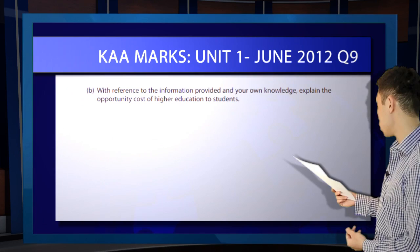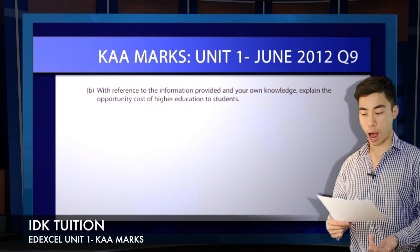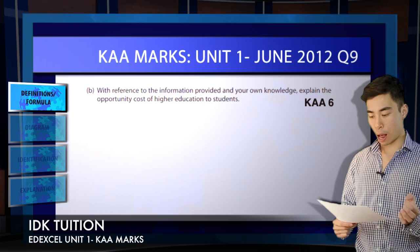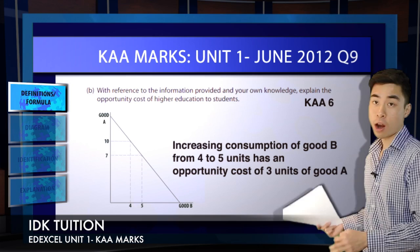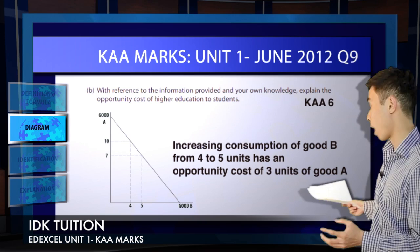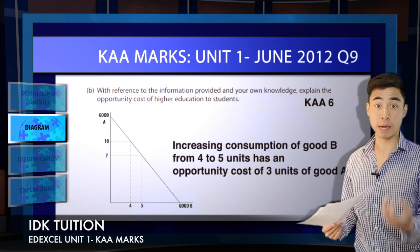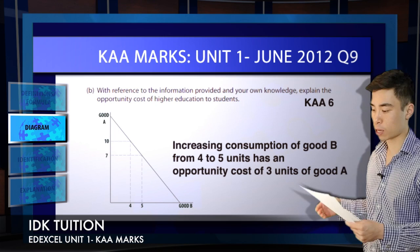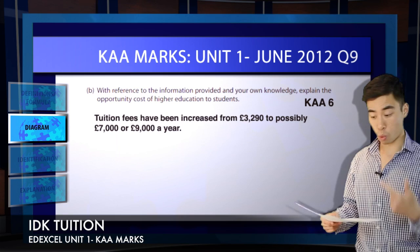Part B says 'with reference to the information provided and your own knowledge, explain the opportunity cost of higher education to students.' This is a six-mark standalone KAA question. Straight away, opportunity cost is a key unit one term — give a definition. Remember, you can also draw a diagram to illustrate graphically what an opportunity cost is, very similar to your production possibility frontier. So we've picked up one mark for the definition and one mark for the diagram.